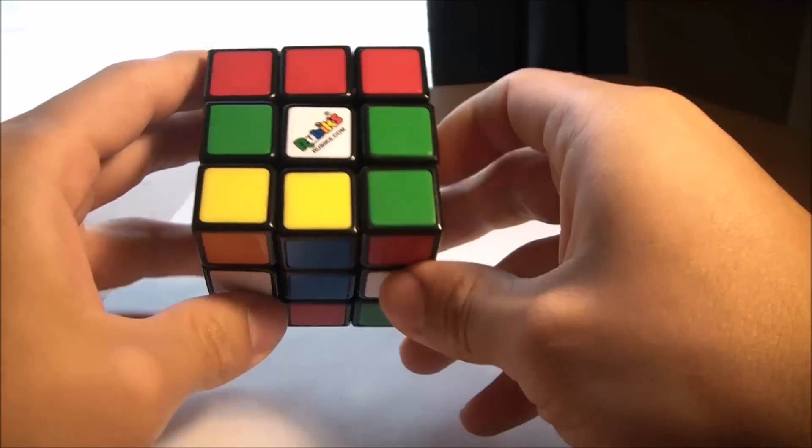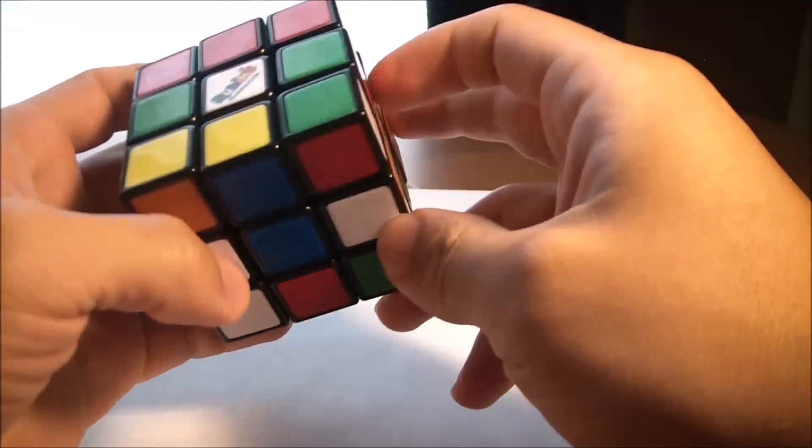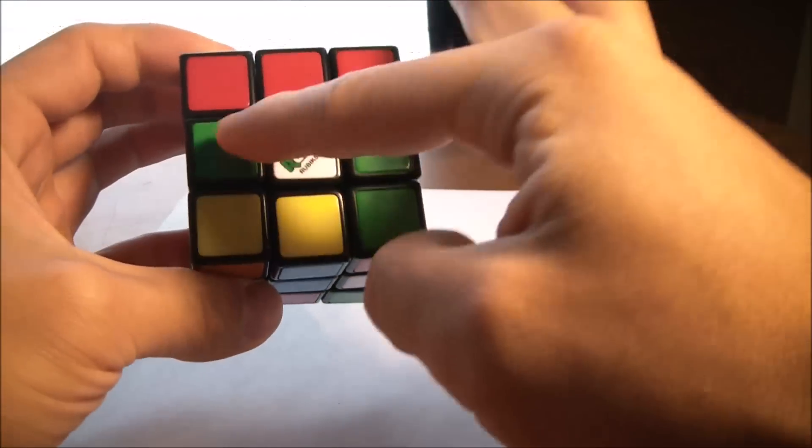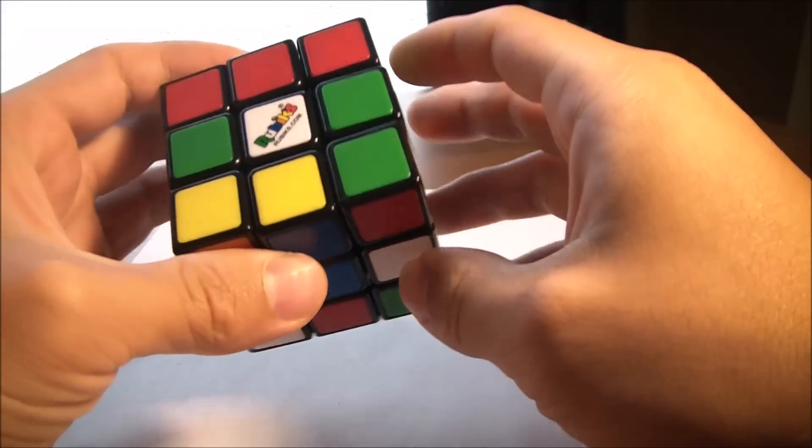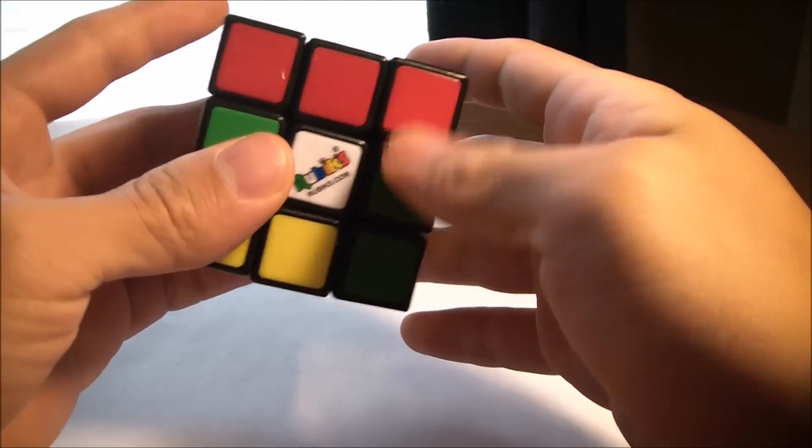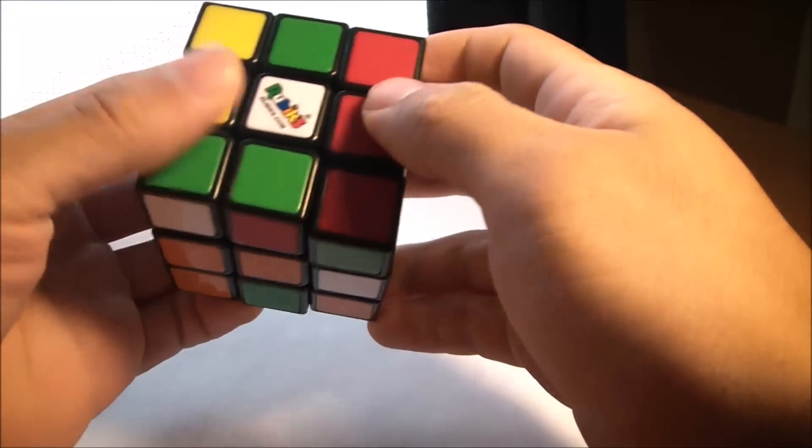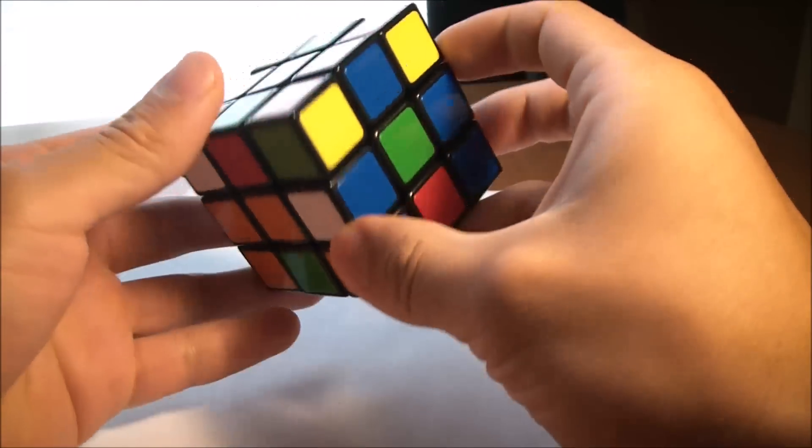Creating the white cross right here takes the most intuition because there's no real algorithms. I guess you can make an algorithm, but you're just trying to place these pieces in their corresponding spot.